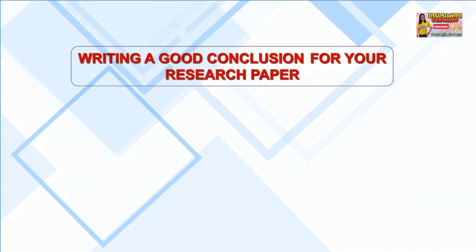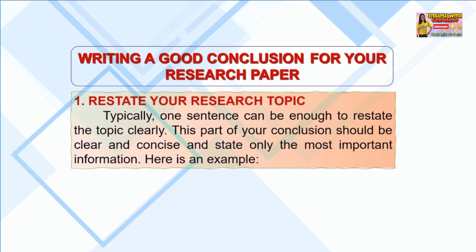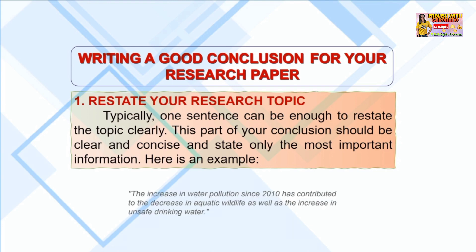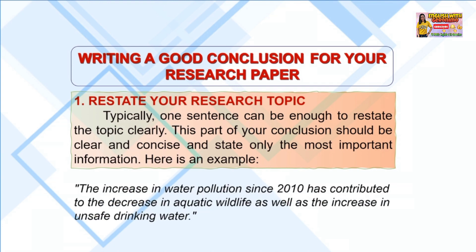Writing a good conclusion for your research paper. When writing your conclusion, you can consider the steps below to help you get started. Number 1: Restate your research topic. Typically, one sentence can be enough to restate your topic clearly. This part should be clear and concise and state only the most important information. Example: 'The increase in water pollution since 2010 has contributed to a decrease in aquatic wildlife as well as an increase in unsafe drinking water.'